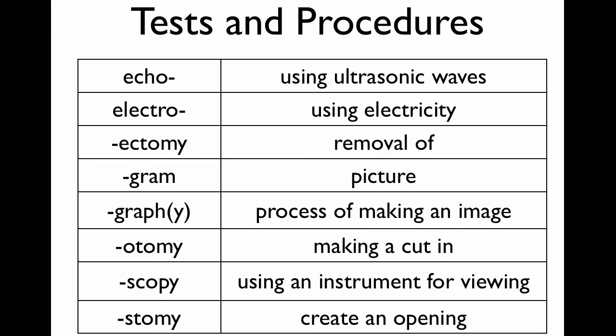Tests and procedures get used a lot, and it's really helpful to know these because you'll see them over and over. Echo, as in echocardiogram, uses ultrasonic waves. Electro — I'm sure you know. Ectomy is the removal. A gram is a picture. A graph refers to the process of making an image. You'll also see terms for making a cut, using an instrument for viewing, or creating an opening.